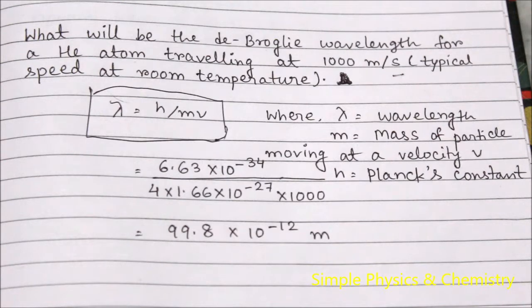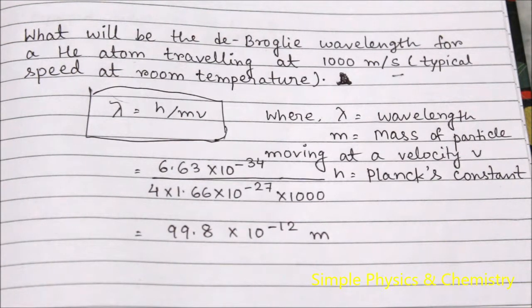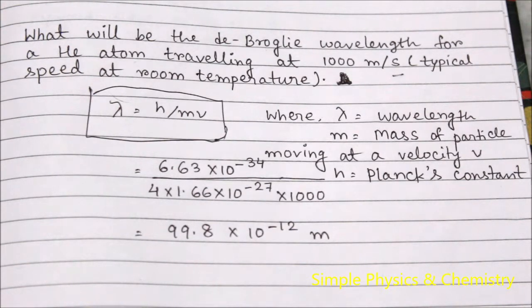Putting in the values, we know that h equals 6.63 times 10 to the power minus 34 joule-second, and 1.66 times 10 to the power minus 27 is one atomic mass unit (amu).